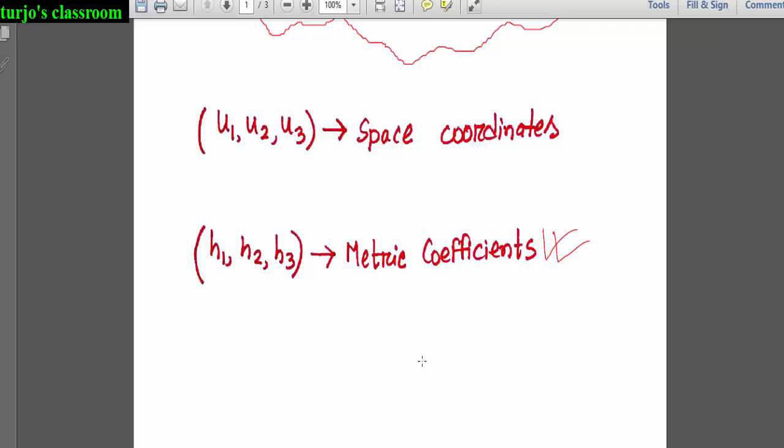We all know the formula s equals r theta. Here an angle theta can be converted into a length only by multiplying it with the radius r. Here r is the metric conversion coefficient that turns an angle into a length.